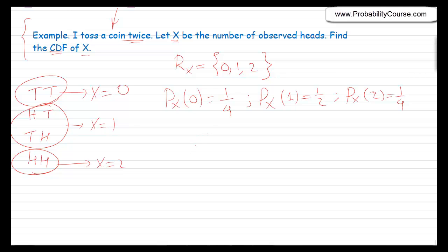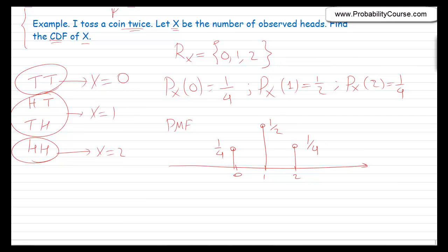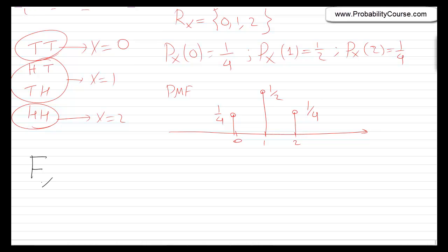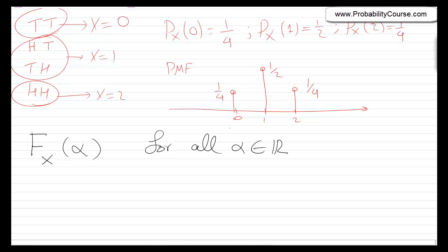So we found the PMF. We can plot it: probability that x equals zero is one-fourth, x equals one is one-half, and x equals two is one-fourth. Now I want to find the CDF. Let's denote the CDF of this random variable by F sub x of alpha, where alpha is a real number — we need to find this for all real values. From the range of this random variable, we can immediately find some values. For example, Fx of minus three is the probability that x is less than or equal to minus three, which is zero, because x is always zero, one, or two.